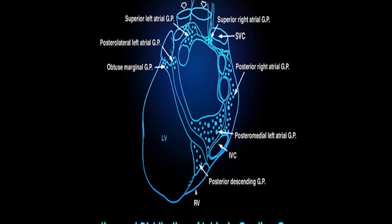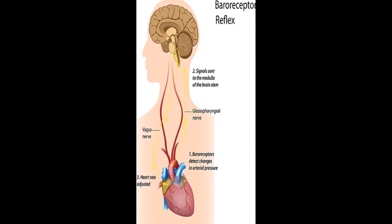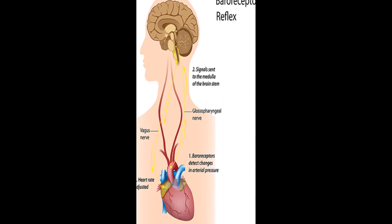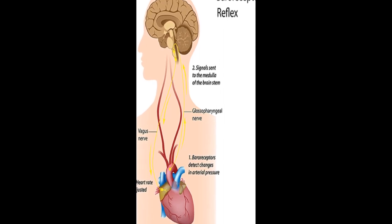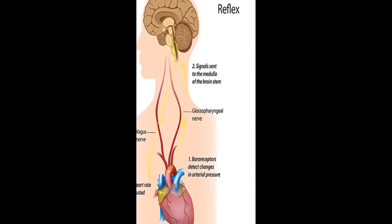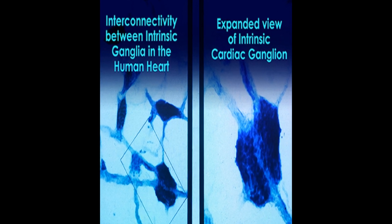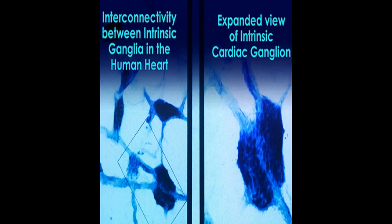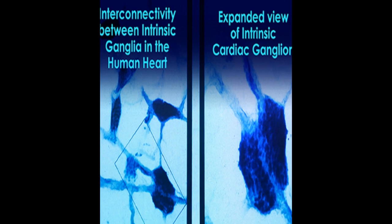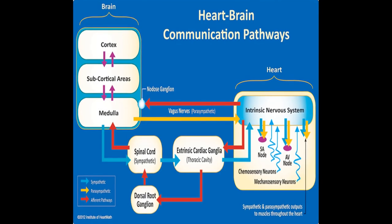The Cardiovascular Regulation Center in the medulla integrates sensory information and input from higher brain centers and afferent cardiovascular system inputs to adjust heart rate and blood pressure via sympathetic and parasympathetic efferent pathways.